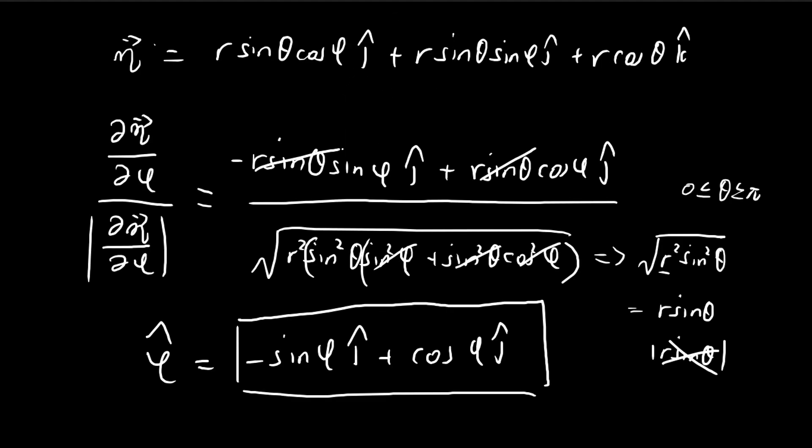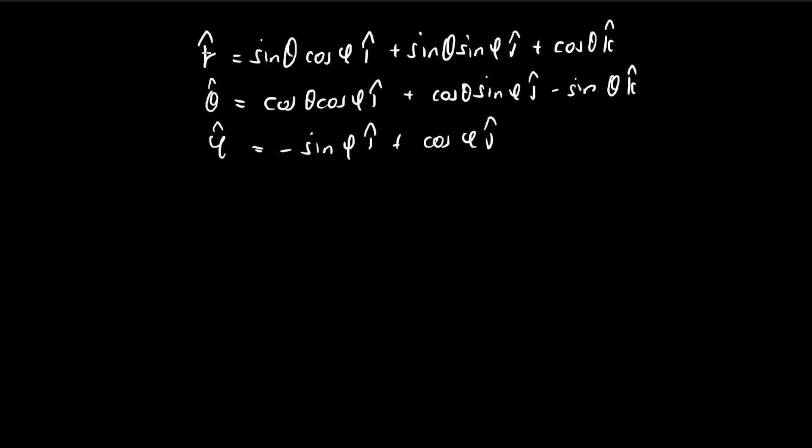Now after everything we did in the previous video, we found what r, theta, and phi should be. Now we need to do some checks to make sure that these vectors make sense. So the first check is to check that this is indeed equal to 1, because these are unit vectors so they should have a magnitude of 1.